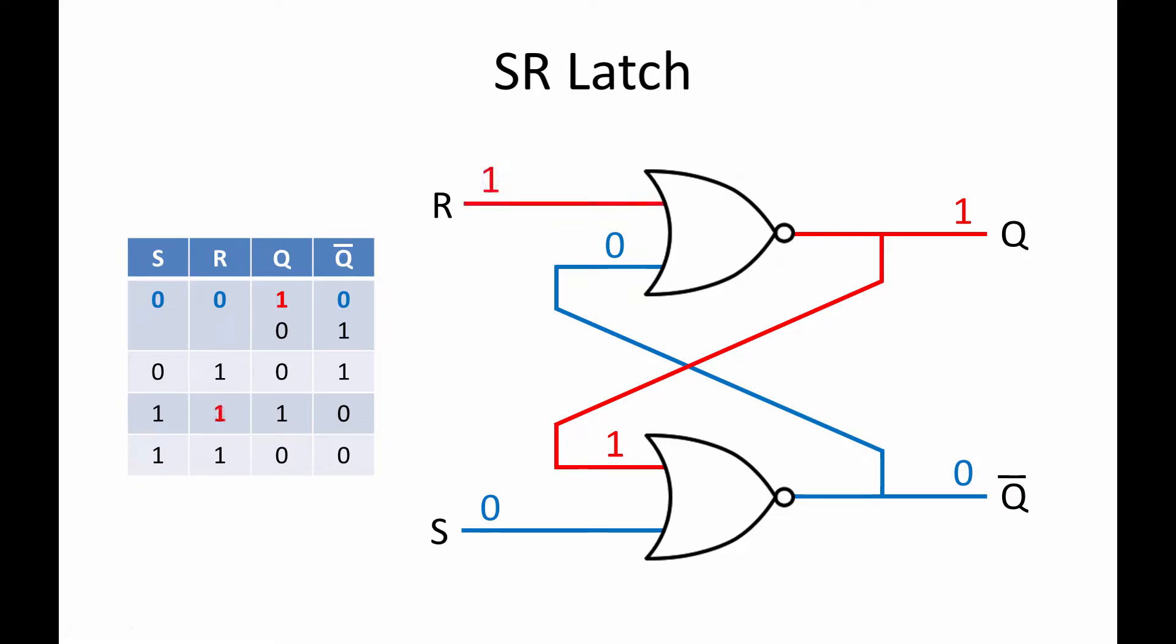A short pulse is applied at R to reset the latch. S is still 0. Trace the highs and lows through the cross-connected NOR gates and you'll see that the output at Q changes to 0. When the reset pulse is removed, R becomes 0 again, but the output at Q is still 0. The latch is now holding on to the 0. When a set pulse is applied at S, the output at Q changes to 1. The latch is now storing a 1.